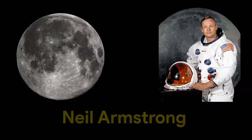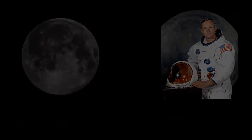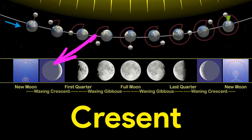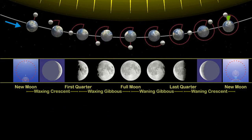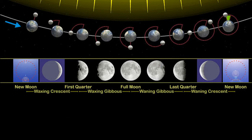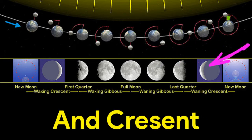Neil Armstrong was the first man to step on the Moon. The phases of the Moon are New Moon, Crescent, First Quarter, Gibbous, Full Moon, and then again Gibbous, Last Quarter and Crescent.